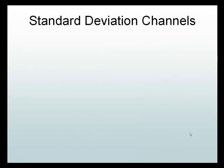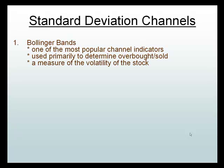There are other types of channels — as we talked about, standard deviation channels — and there are basically four types. First and foremost, we have Bollinger Bands. They're probably the most popular form of technical analysis indicators out there and one of the most popular types of channels. They're used primarily to determine overbought and oversold — very similar to straight channel lines — but now we're measuring the volatility of the stock. The bands are no longer straight; they now take on fluidity and have shape.